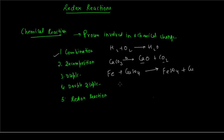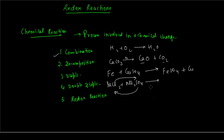Then, double displacement reaction, where there is an exchange of anions. For example, barium chloride plus sodium sulfate. Sodium sulfate gives Na⁺ ions and SO₄²⁻ ions, and barium chloride gives Ba²⁺ and Cl⁻ ions. The sulfate ion goes to the barium compound and the chloride ion comes to the sodium compound, giving you barium sulfate (BaSO₄) plus sodium chloride (NaCl). That is a double displacement reaction.